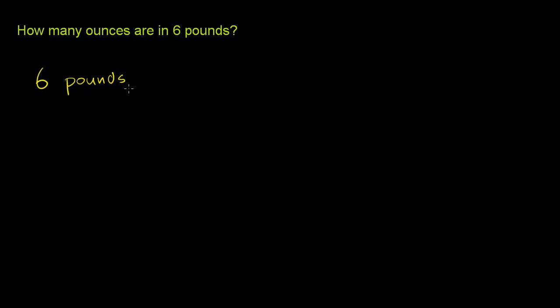So what we want to do is we want to have pounds in the denominator. It's in the numerator right now. So we want to divide by pounds and multiply by ounces. And I just told you that there are 16 ounces for every 1 pound.